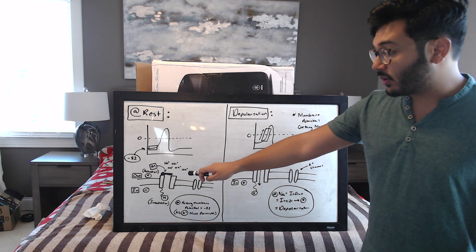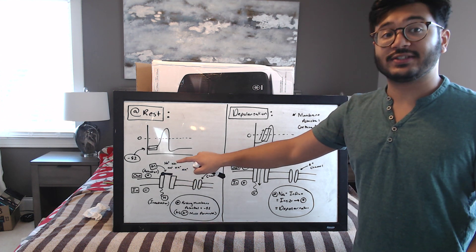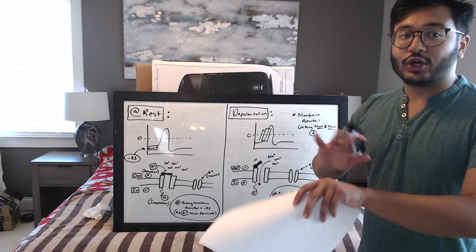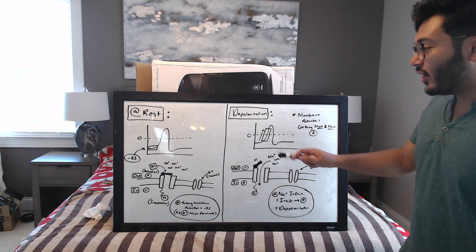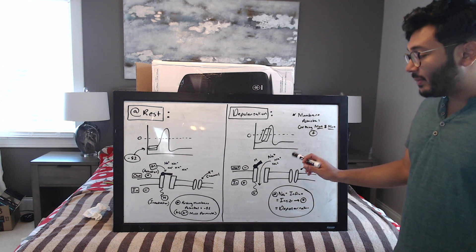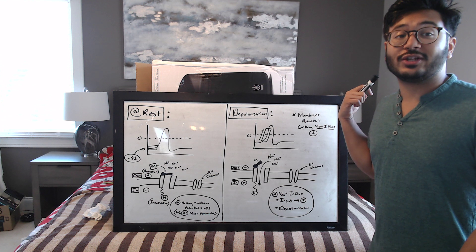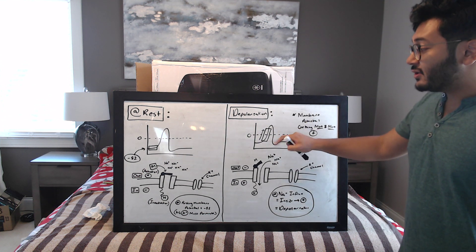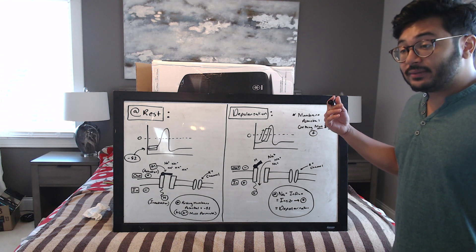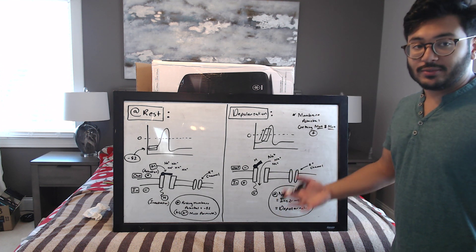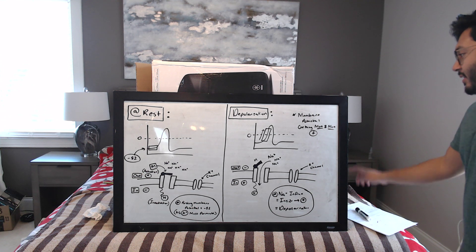During resting membrane potential, the M gate was closed, so all the sodium trying to get in couldn't — it was getting rejected, basically couldn't open the door. As soon as you get depolarization, the M gate swings open, sodium comes in, and the inside of your cell becomes more and more positive — meaning you get depolarized. This corresponds to the M activation gate opening, activating depolarization.